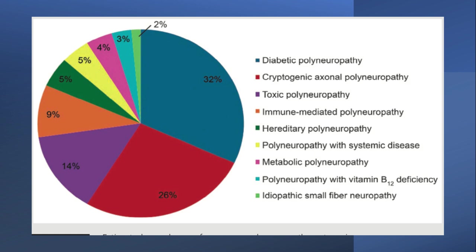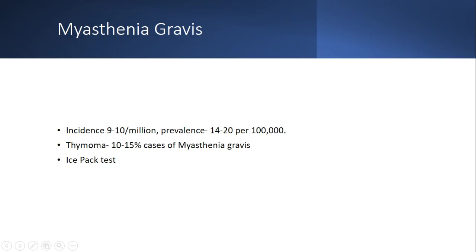Diabetic and cryptogenic are the two biggest pieces of the pie. Toxic polyneuropathy and immune-mediated polyneuropathy are a big chunk — important because it's treatable. Hereditary neuropathy still has no treatment, but is important for understanding disease progression and patient counseling. Polyneuropathy with systemic diseases, metabolic polyneuropathy, and B12 deficiency are also important since B12 deficiency is treatable.